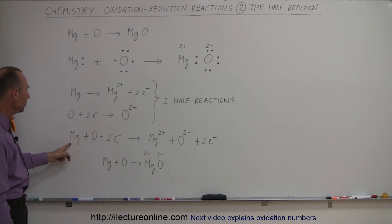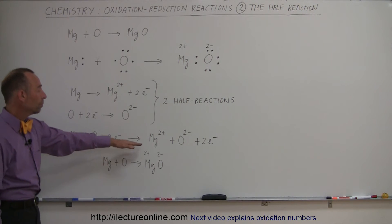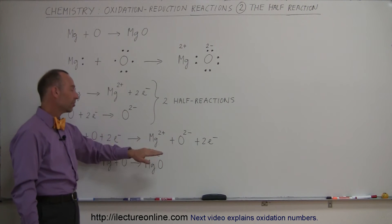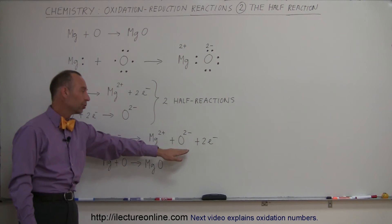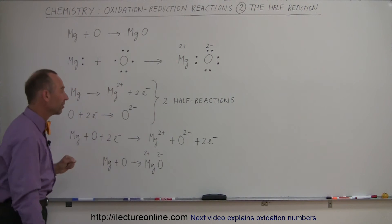we end up with magnesium in its neutral state, plus oxygen in its neutral state, plus the two electrons being shared, going to magnesium that's now being oxidized, oxygen that's now being reduced, plus the two electrons on the right side. And then, of course,